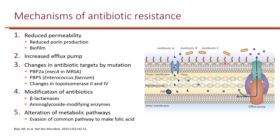Here are the common mechanisms of antibiotic resistance. For antibiotics to work, they need to get to the site of action, which provides several opportunities for bacteria to prevent that. The first mechanism is reduced permeability. Looking at gram-negative bacteria with two membranes — inner and outer — many antibiotics must penetrate through the outer membrane, often via a porin channel. Bacteria can reduce or even eliminate production of these porin channels, blocking the entry of antibiotics.